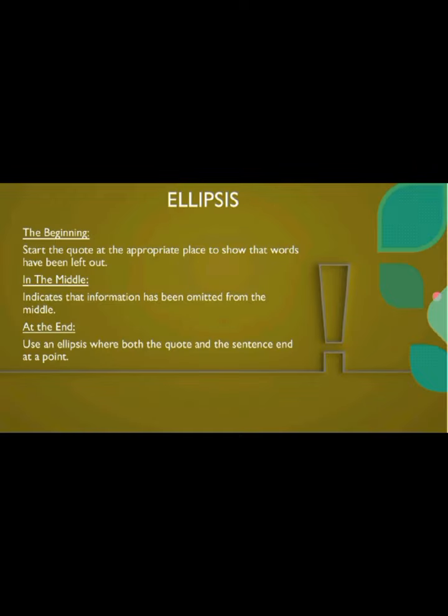Ellipses is a symbol which can be represented using three spaced periods. It denotes continuation. Ellipses can be placed at the beginning, in the middle, or at the end of a particular quotation. It indicates where the information has been omitted.